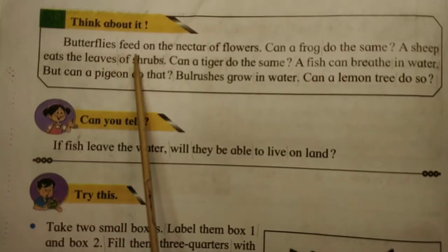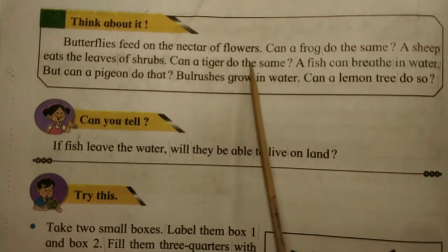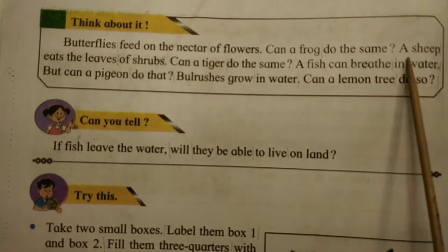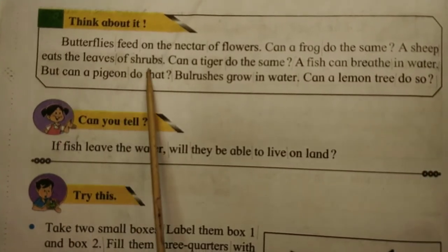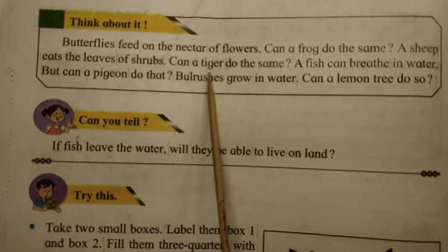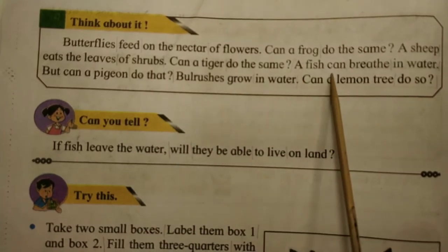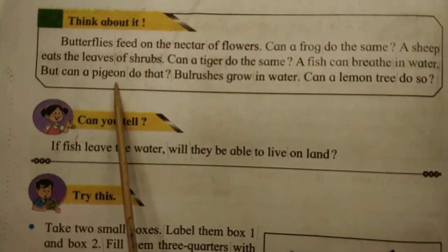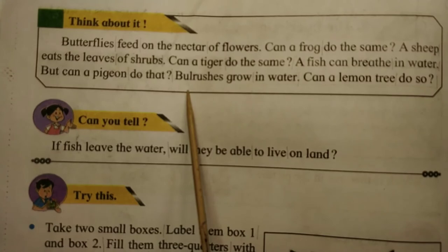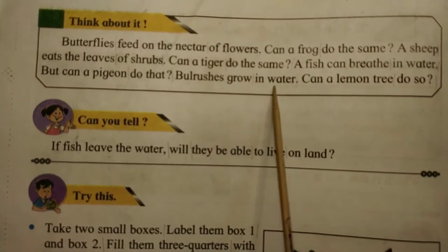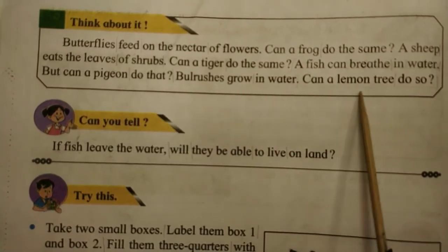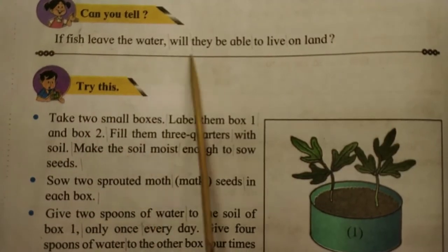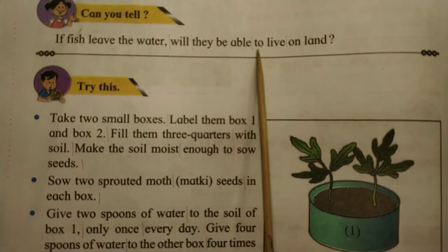Butterflies feed on the nectar of flowers — can a frog do the same? A sheep eats the leaves of shrubs — can a tiger do the same? A fish can breathe in water, but can a pigeon do that? Bullrushes grow in water — can a lemon tree do so? If fish leave the water, will they be able to live on land?